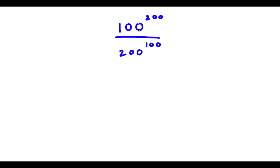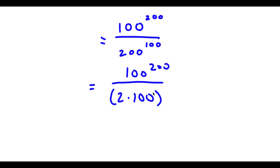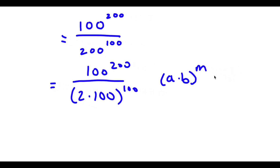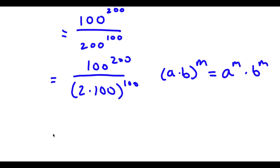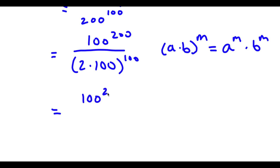So I have 100 to the power of 200 over 200 to the power of 100. Now, 200 is the same thing as 2 times 100. So I have 100 to the power of 200 over 2 times 100 to the power of 100. Now, if I have something in the form a times b to the power of m, this is equal to a to the power of m times b to the power of m. So I have 100 to the power of 200 over 2 to the power of 100 times 100 to the power of 100.